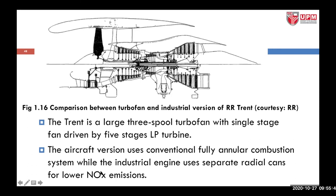The industrial engine uses separate radial cans for lower NOx emissions, because for land-based applications you do not want to release nitrogen oxides into the environment at ground level. For high-altitude aircraft applications, this is not as severe an environmental concern.